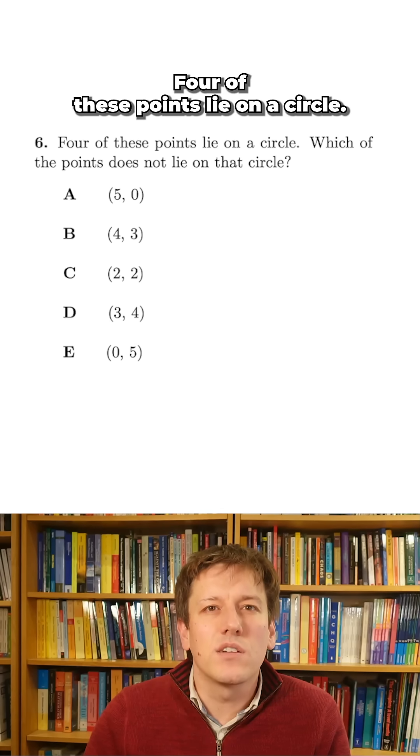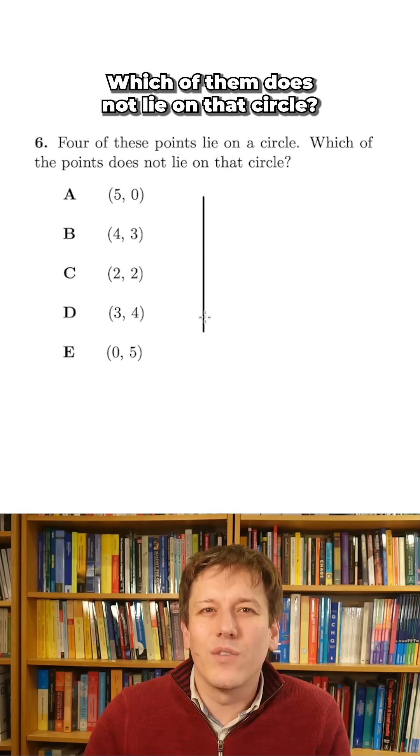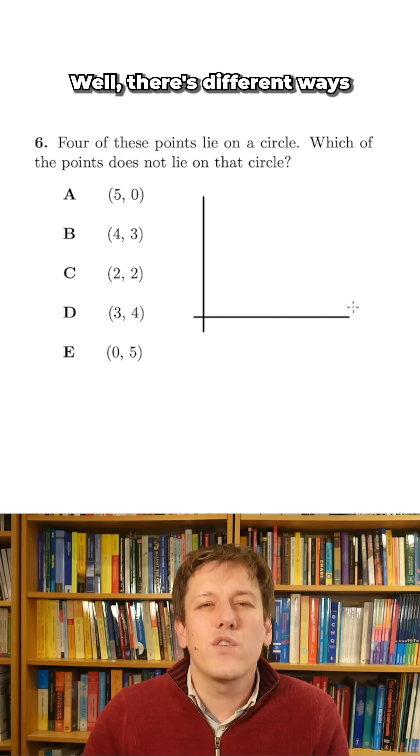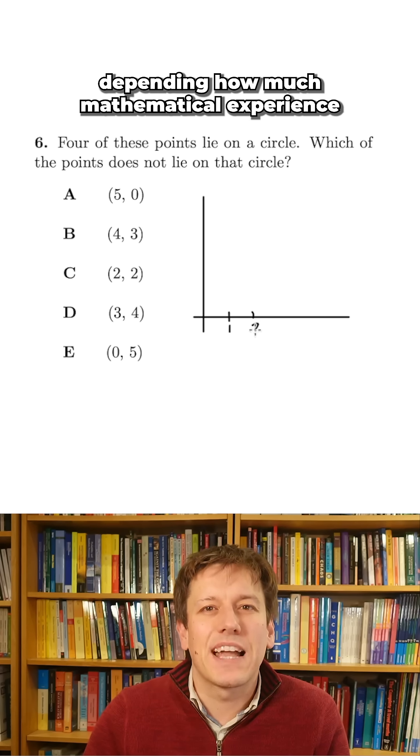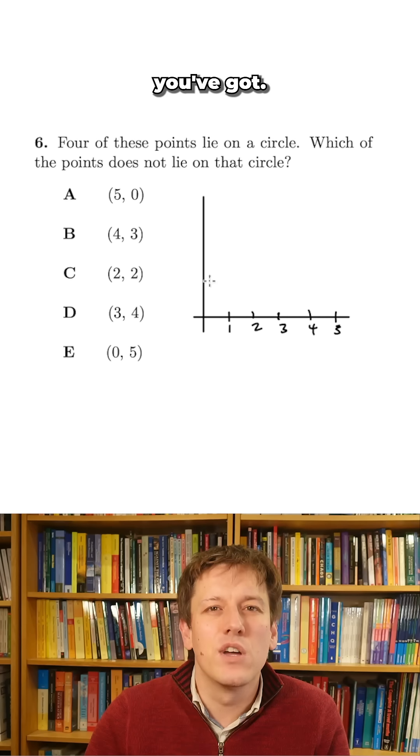Four of these points lie on a circle. Which of them does not lie on that circle? Well, there's different ways you can go about this question, depending on how much mathematical experience you've got.